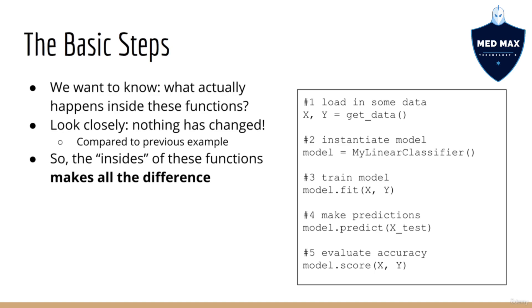To recap, here are the steps we do in a typical machine learning script with Scikit-learn. First, we are going to load in some data. We call that x and y. Next, we're going to instantiate a model. Next, we are going to train or fit the model using model.fit(x,y). Next, we are going to make predictions with the model using model.predict(x). This can be the same x or a different x. For example, x-train or x-test. Finally, we can evaluate our model using model.score(x,y).